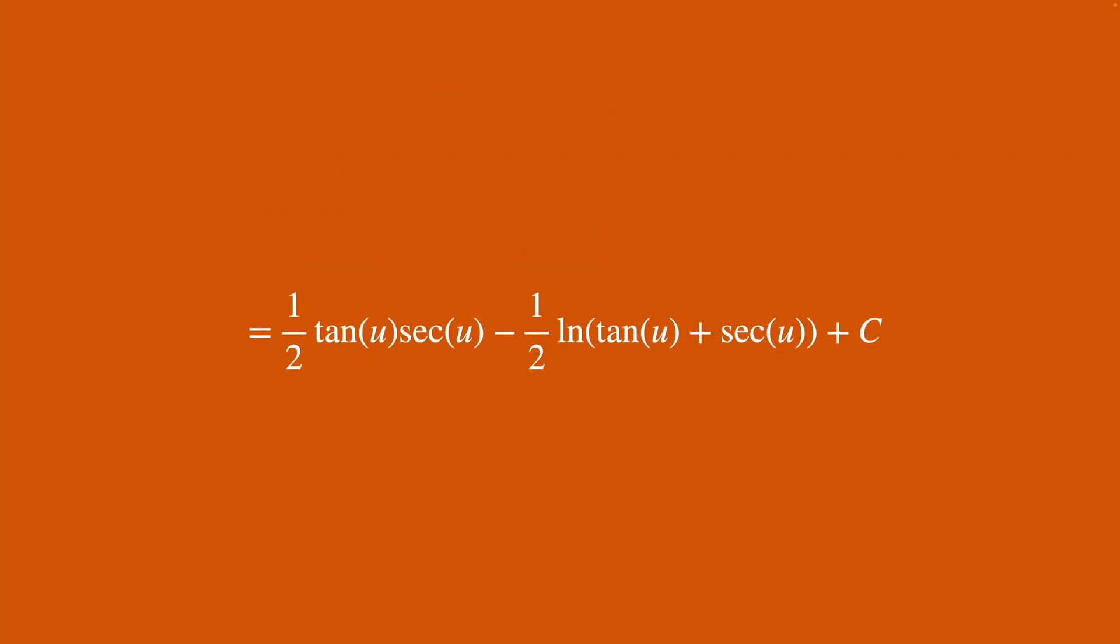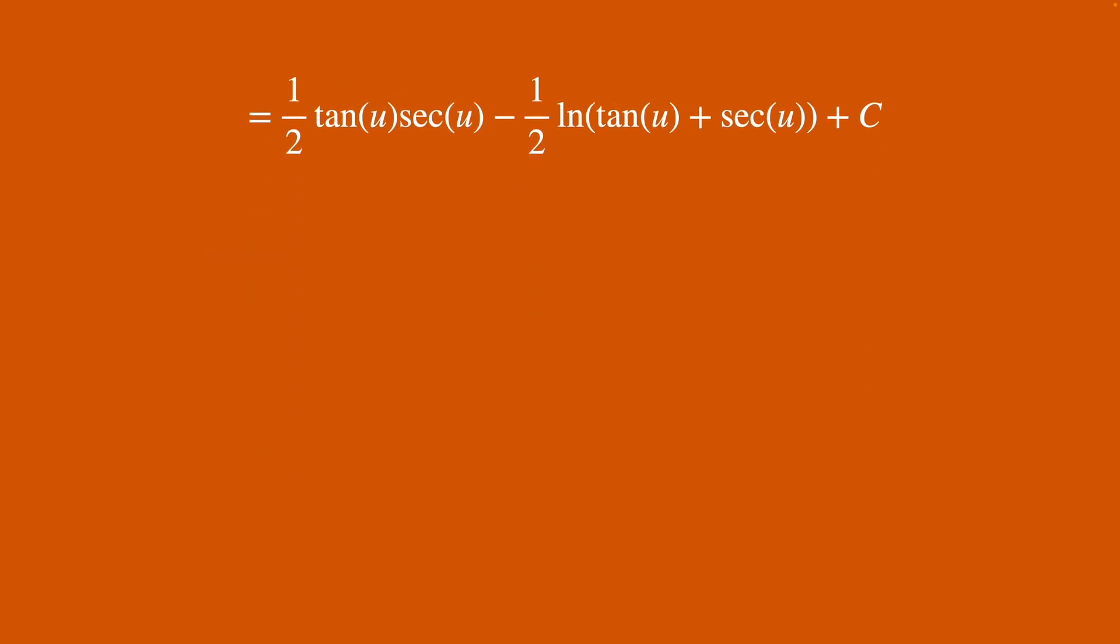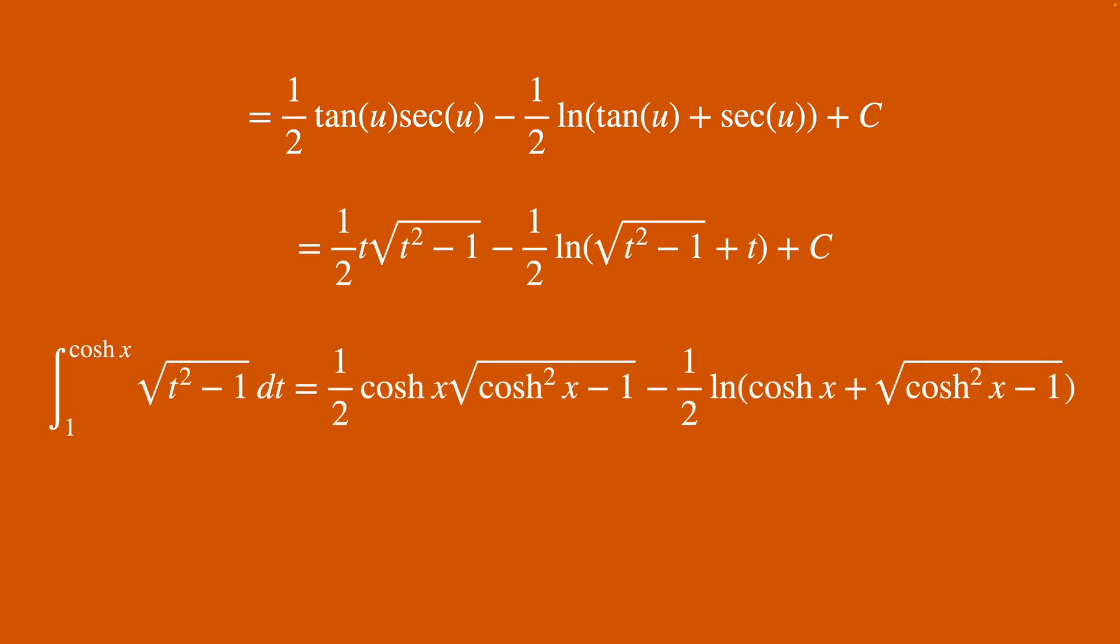But we're not done yet, right? As we need to substitute inverse sec t in for u. So we get this guy here, but now we just plug in our original endpoints and do some simplifications here and get this enormous mess on the right hand side.